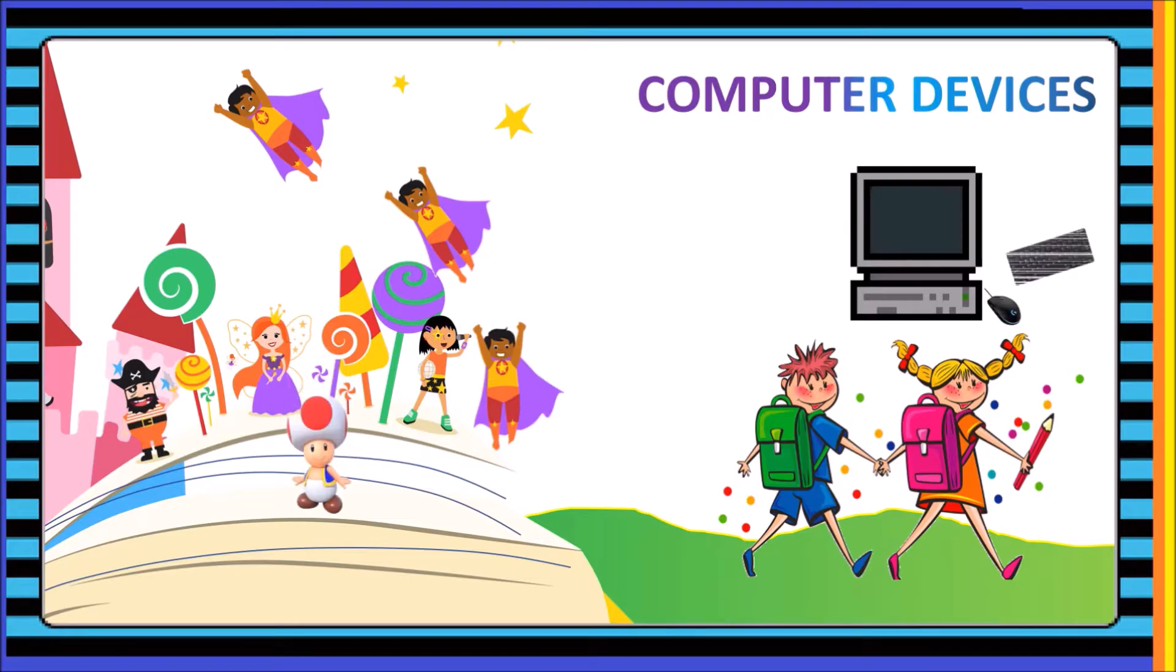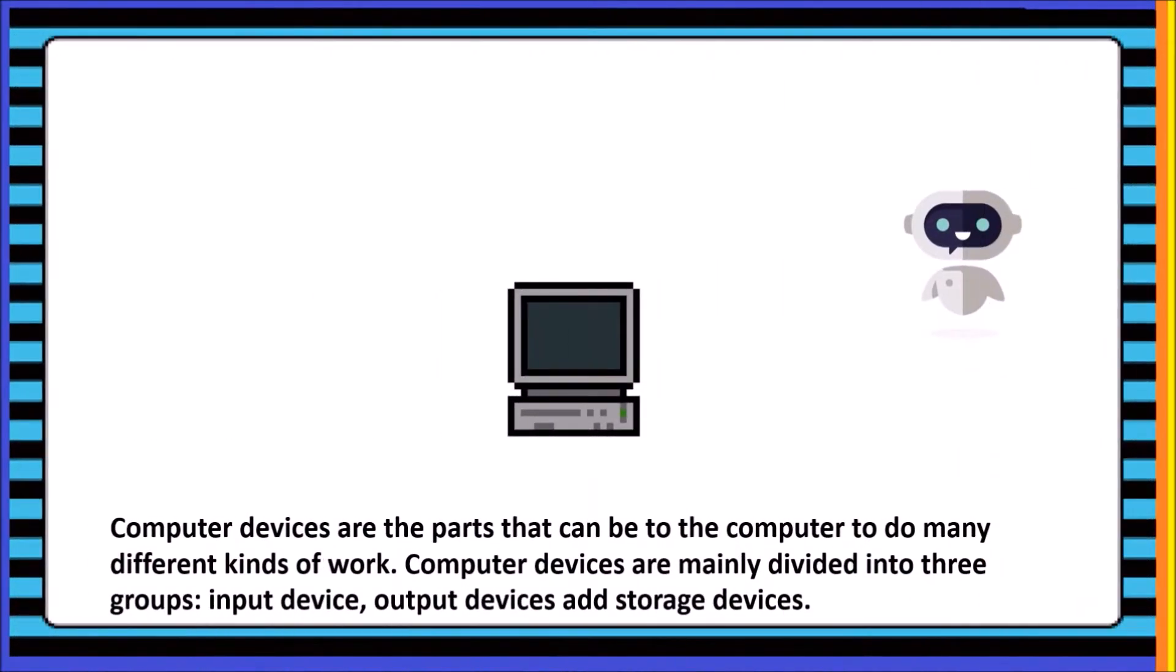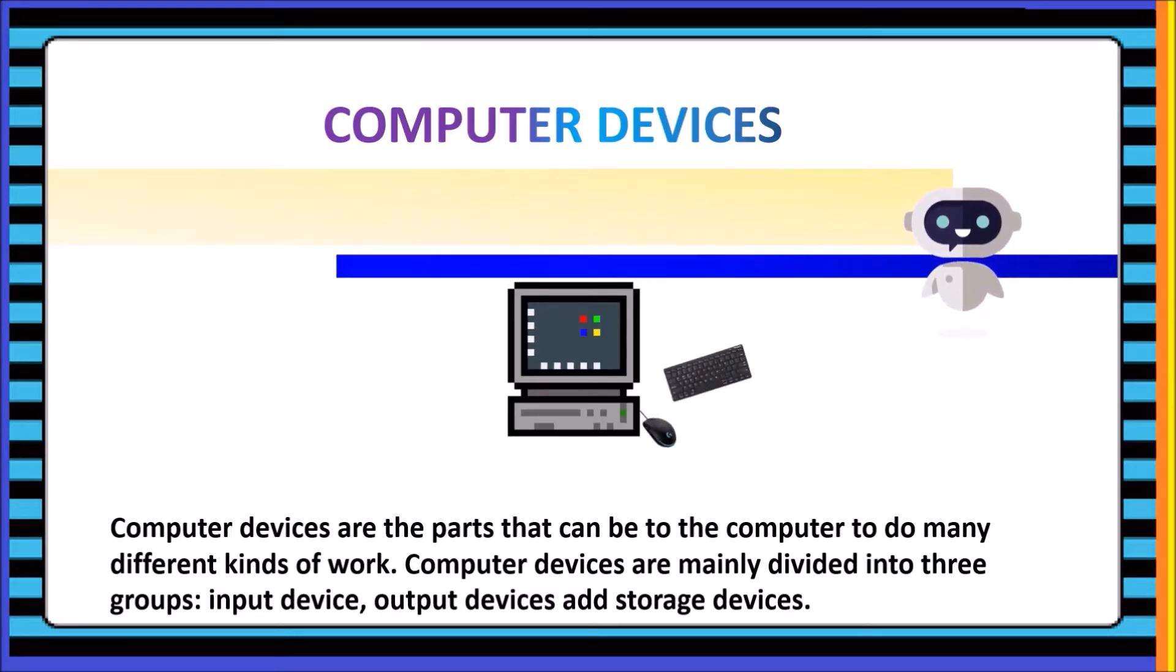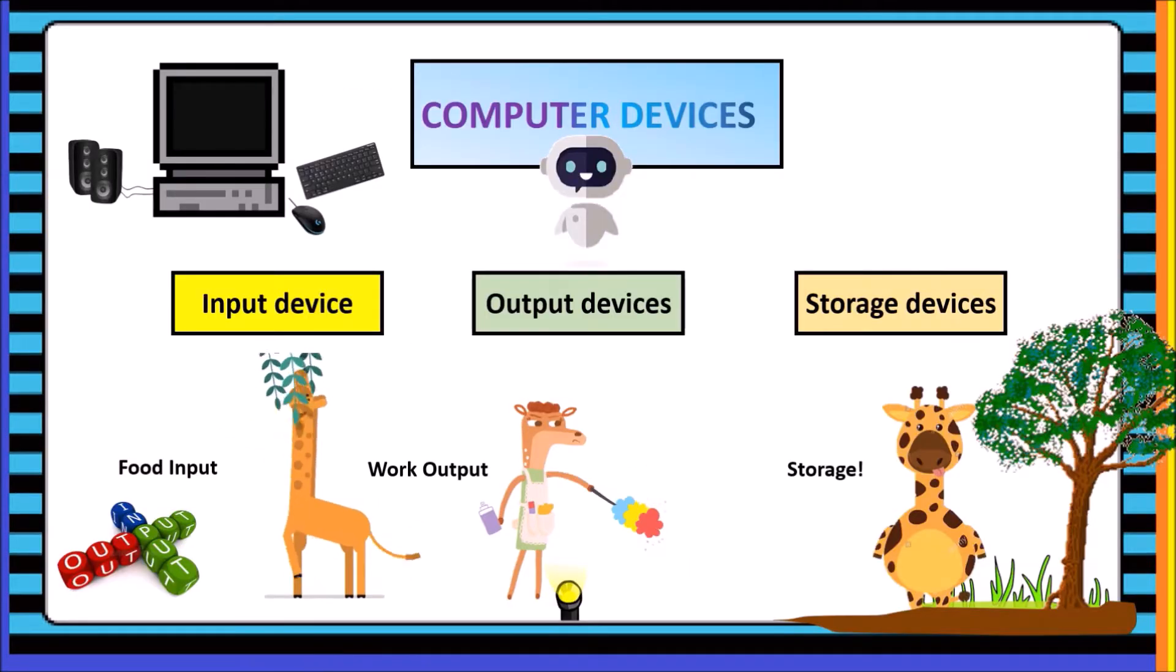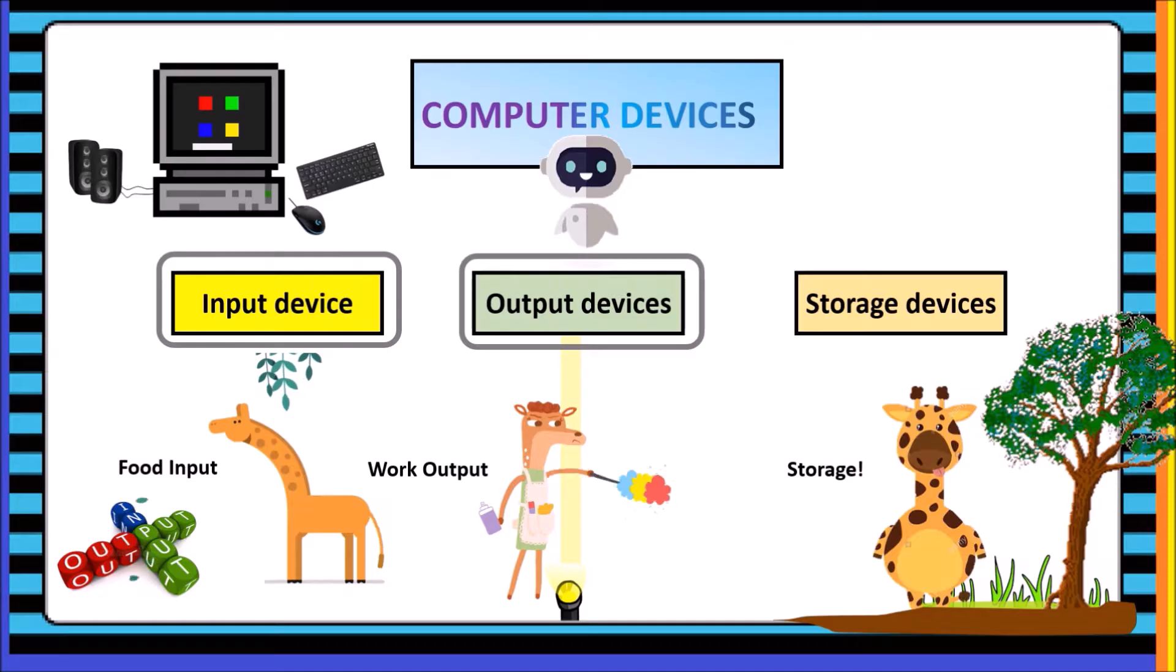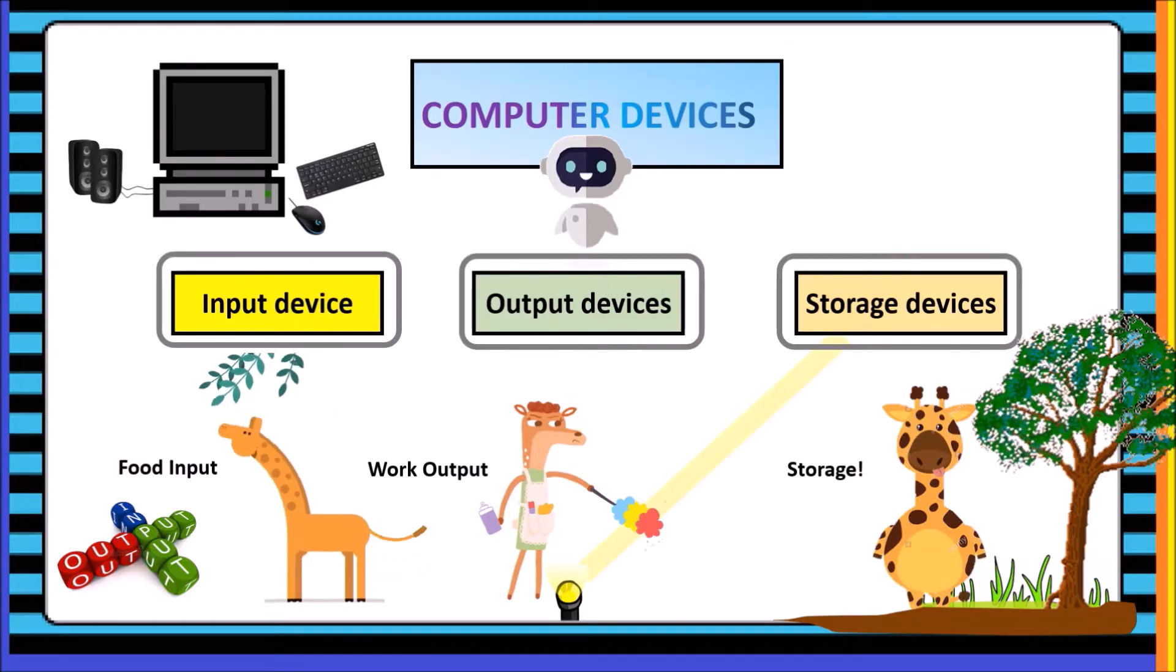Computer devices are the parts that can be attached to the computer to do many different kinds of work. Computer devices are mainly divided into three groups: input devices, output devices, and storage devices.